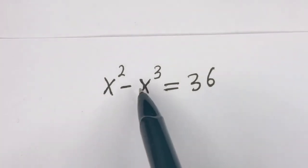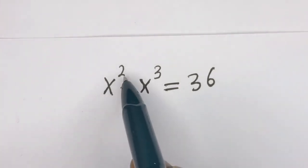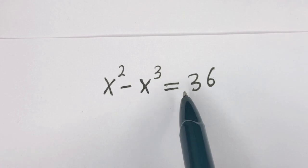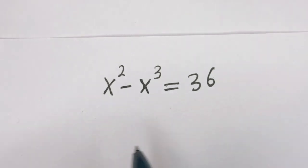Hello. How to solve for s in this equation: s squared minus s to the power of 3 is equal to 36.